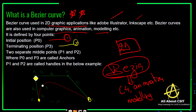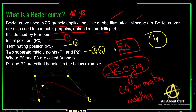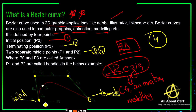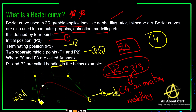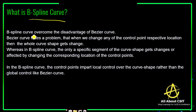So we have P0 as the initial position and P3 as the terminating position. In between there are two middle points, P1 and P2. These four points are very important — the complete Bezier curve depends on them. P0 and P3 are called anchors, and P1 and P2 are called handles. Based on the initial point and the middle points, the curve shape is generated.